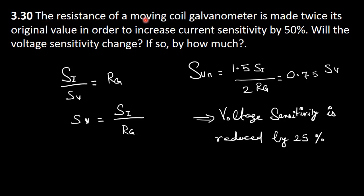The resistance of your moving coil galvanometer is made twice its original value in order to increase current sensitivity by 50%. Will the voltage sensitivity change?